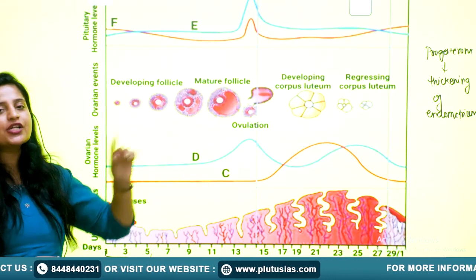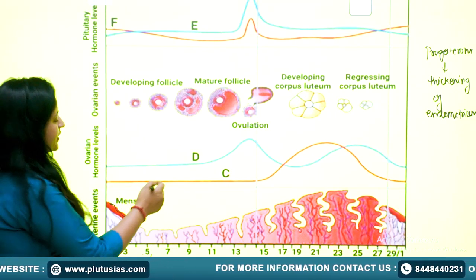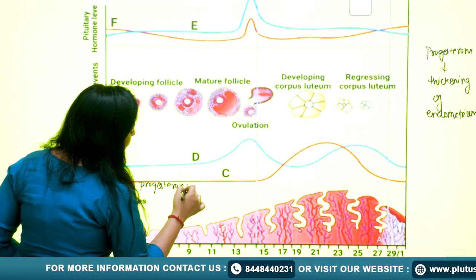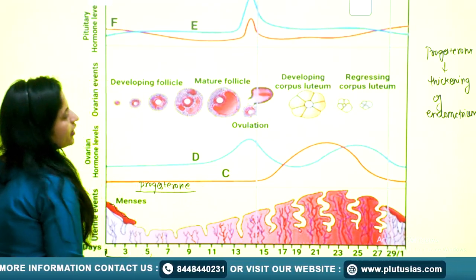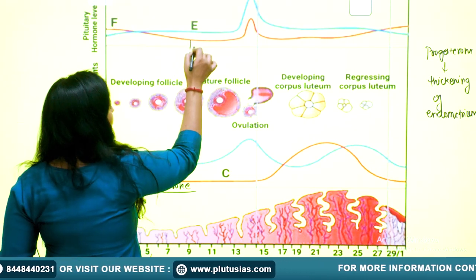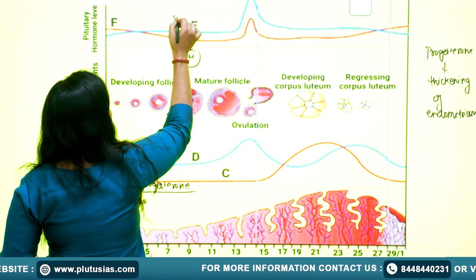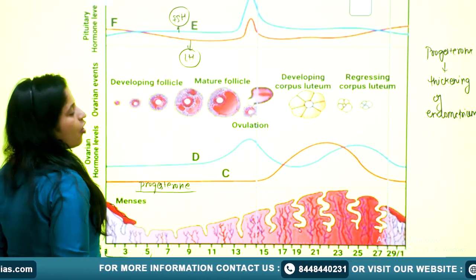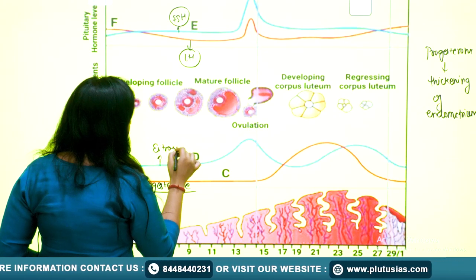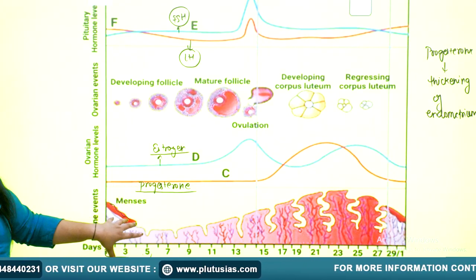The reason the endometrium falls is that progesterone maintains the endometrium. Looking at the chart, the red curve is progesterone. During menstruation there is no progesterone visible — it is low. The other hormones visible are LH (luteinizing hormone), FSH (follicle-stimulating hormone), and estrogen. Since progesterone is low, there is no need to maintain the endometrium, so it sheds off.